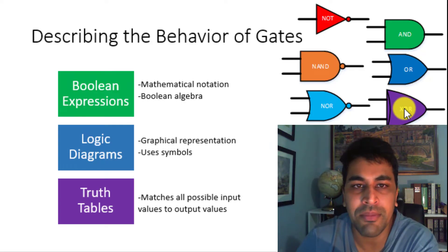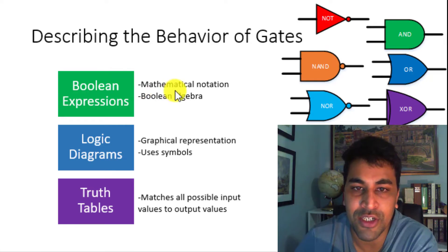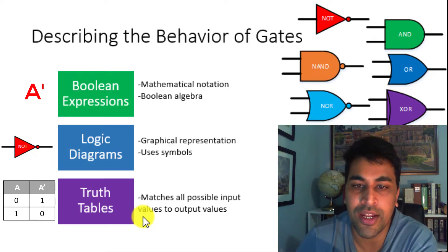We can describe the behavior of these gates by using Boolean expressions, logic diagrams, and truth tables. Boolean expressions use mathematical notation, a branch of algebra called Boolean algebra, which associates each variable with two values. Logic diagrams associate a symbol to each gate, providing a graphical representation. And finally, truth tables match every combination of input to an output value.